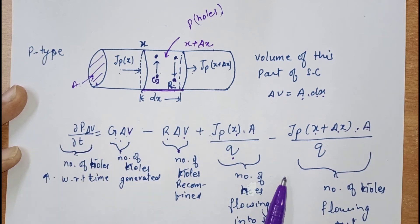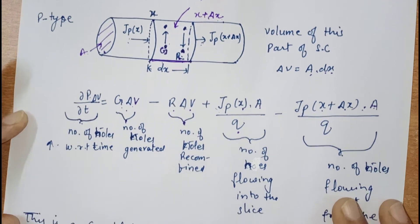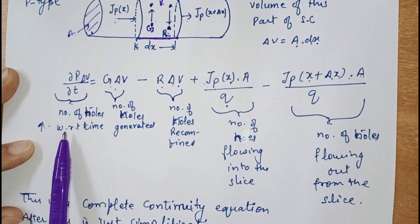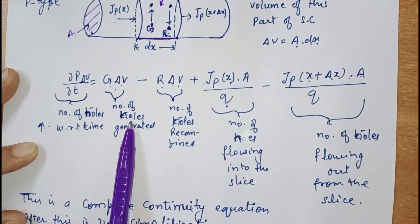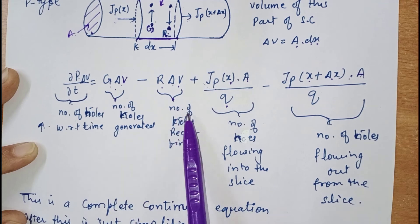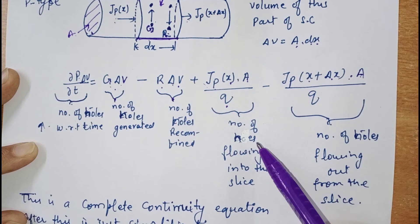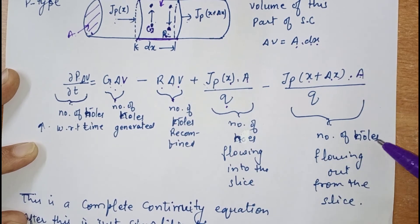This equation is the complete continuity equation, and what remains is just simplification. To summarize: this term is the change in number of holes with respect to time; this term is the number of holes generated; this is the number of holes recombined; this is the number of holes flowing into the slice; and this term is the number of holes flowing out from the slice.